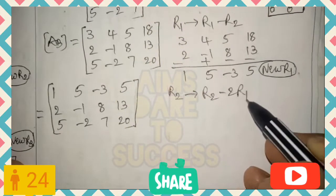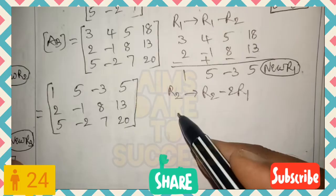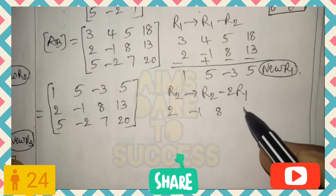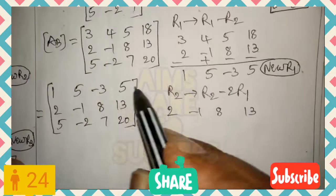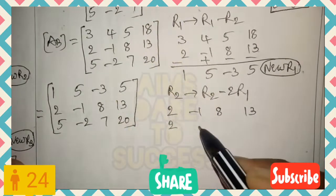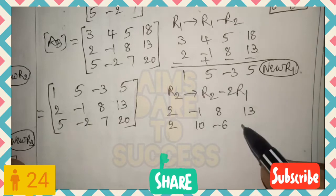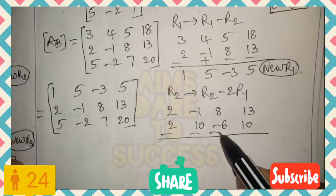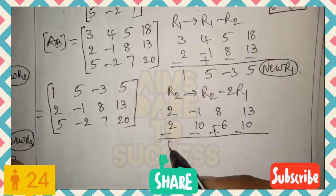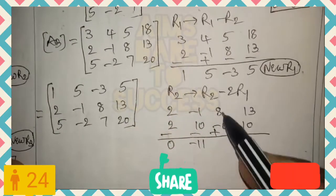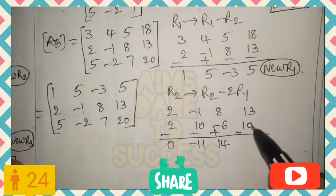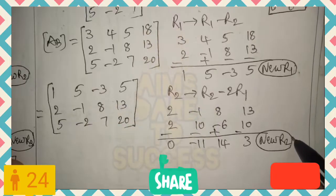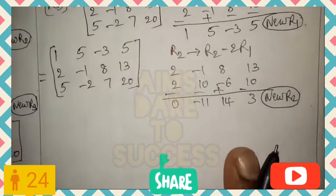Since R2's first element is 2 and R1's is 1, we multiply R1 by 2 and compute R2 minus 2R1. R2 is 2, -1, 8, 13 and 2 times R1 is 2, 10, -6, 10. Subtracting: 2-2=0, -1-10=-11, 8+6=14, 13-10=3. The new R2 is 0, -11, 14, 3.